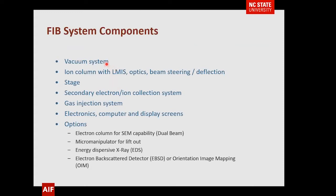What's in an FIB? We need a vacuum system — those ions don't go very far in air. We need an ion column with the source we'll discuss shortly. Optics, steering, deflection. We need a stage to move the sample. Something to collect the secondary electrons or ions. The gas injection systems are used for deposition and etch. Of course we need a computer. Most FIBs sold now have an SEM added, which makes the instrument much more capable. There's also an instrument called a micromanipulator to lift out samples, and you may have EDS and EBSD capabilities as well.